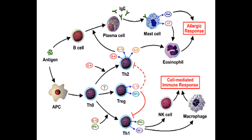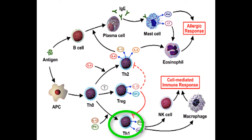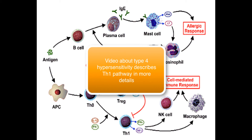If the APC sends interleukin-12 instead, it will differentiate the null T-helper cell into Th1, which then activates and amplifies macrophages and natural killer cells. This pathway is covered in detail in the video about type 4 hypersensitivity.